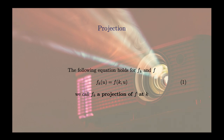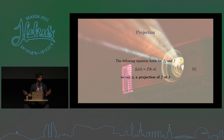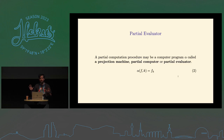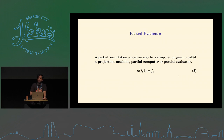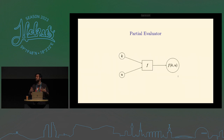What is projection in the projection machine? The following equation holds: F with K applied to U equals F applied to K and U. If this holds, then F_K — F with K — is called a projection of F at K. A partial evaluator, or projection machine, is a function alpha that takes our function F and the parameter we want to bind, and gives back the partial evaluation of that function at that point: alpha(F, K) gives us F_K.